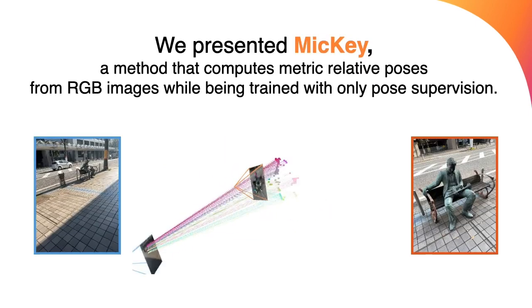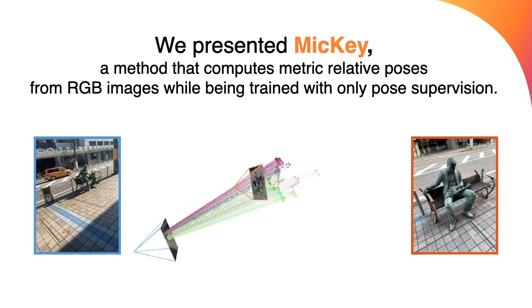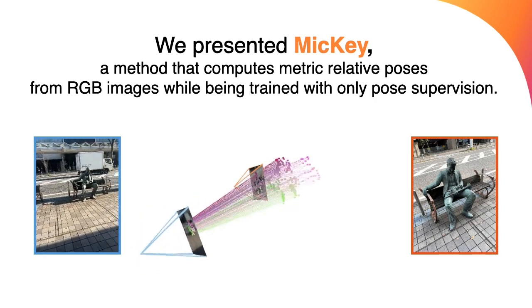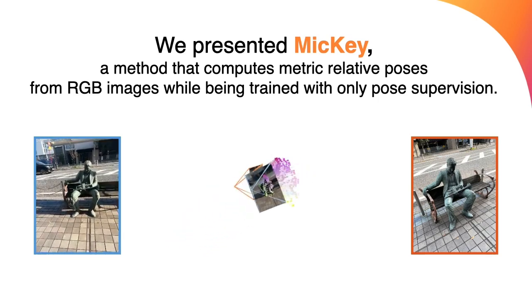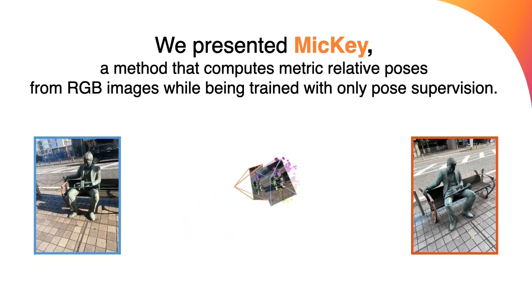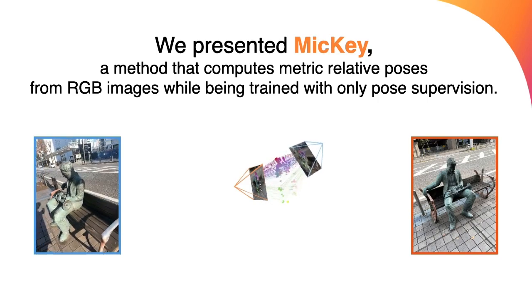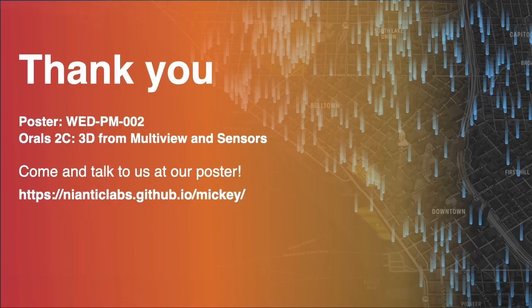To sum up, MICI computes metric relative poses from two RGB images. MICI only requires metric relative poses for training, making it very easy to train in new domains. Thank you all for listening. You can visit our project webpage for more examples, experiments, and access to the code.